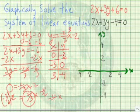So with these three points, we have 0, negative 2. We have negative 3, 0, and we have 3, negative 4.